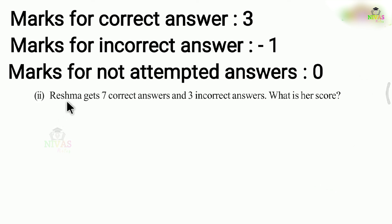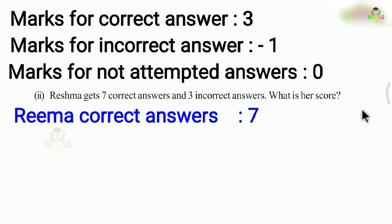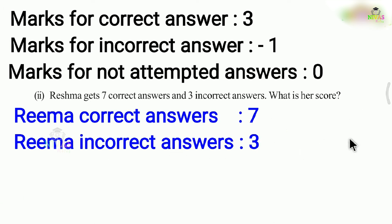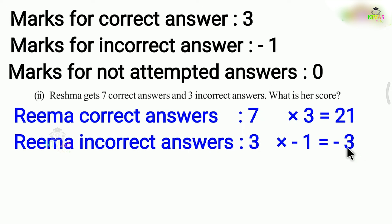The second problem: Reshma gets 7 correct answers and 3 incorrect answers. What is her score? That means 7 plus 3 equals 10 questions. For 7 correct answers at 3 marks each: 7 into 3 is 21 marks. For 3 incorrect answers at minus 1 each: 3 into minus 1 is minus 3. So the answer is 21 plus minus 3, which is 18.